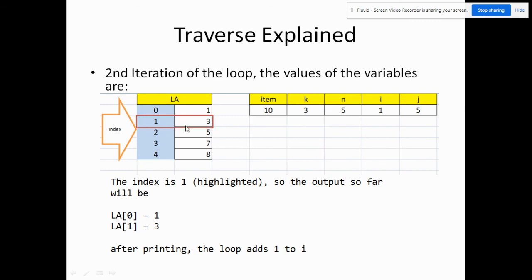And in our printout, we'll now be pointing to index equal to 1. The index is 1 highlighted. So the output so far: this was our output on the first iteration, and this one will be added to our output, LA 1 equals 3. After printing again, we add one to i.